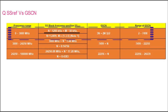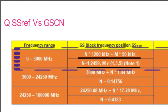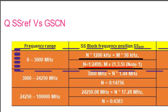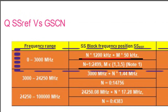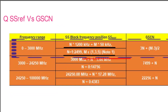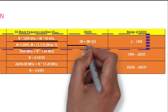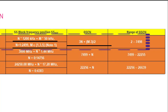So SS_ref = N × 1200 kHz + M × 50 kHz. The N value range is 1 to 2499 and M value range is 1 to 5. The 1.2 MHz is the frequency raster — scanning happens every 1.2 MHz step across the whole bandwidth to find the SSB/GSCN location.